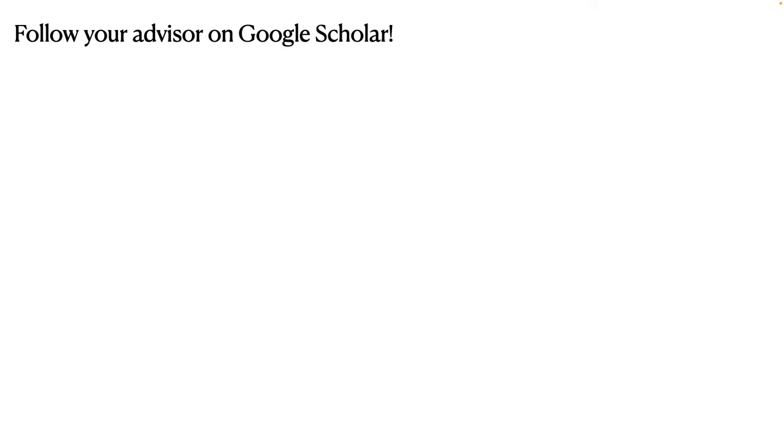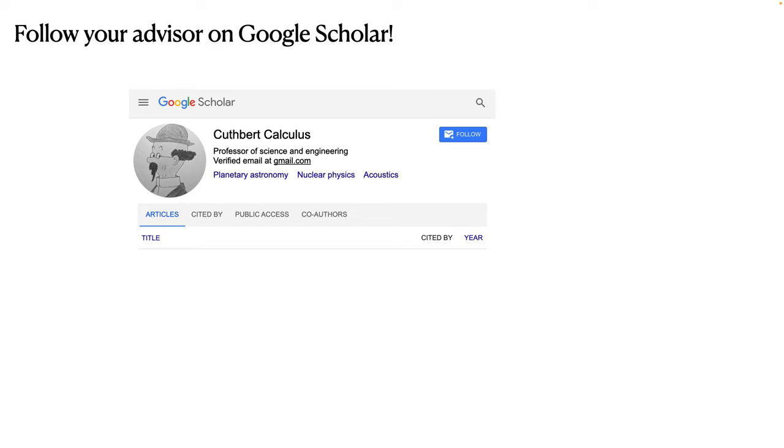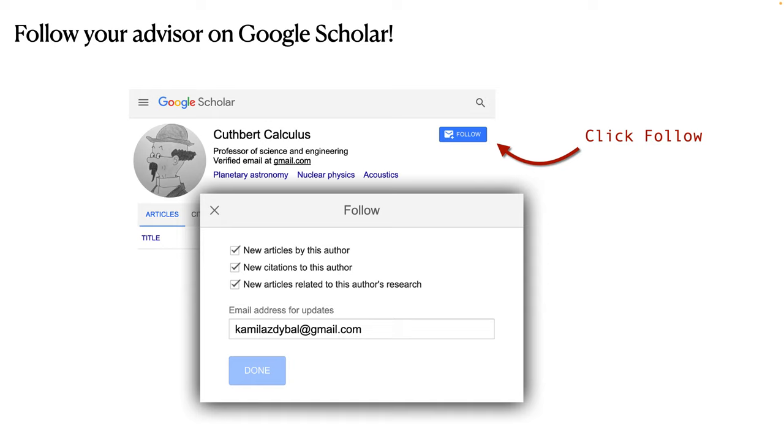And the first powerful thing that you can do is to follow your advisor on Google Scholar. I really recommend that you do that early on in your PhD. So you find your advisor and you simply click on this button, follow, and you'll see this pop-up window. And for your advisor, I recommend that you tick all of these three boxes.